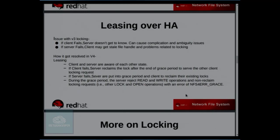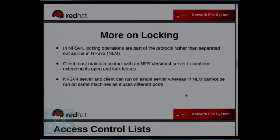More on locking: in NFS V4 locking is integrated — there is no NLM or extra protocol layer. The client must maintain contact with the NFS V4 server to keep extending its open and lock leasing; when a lease is about to expire, the client is responsible for renewing it. Additionally, in NFS V3, a node cannot run both NLM server and client on the same machine, whereas in NFS V4 a single node can act as both server and client.